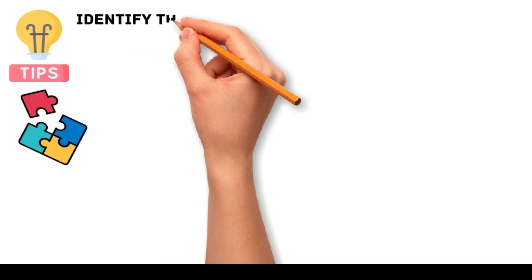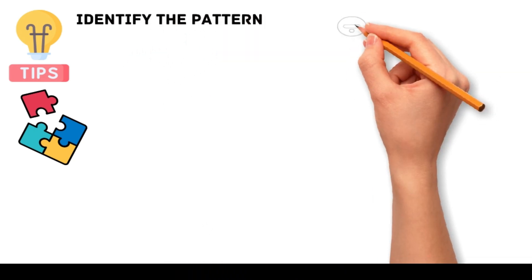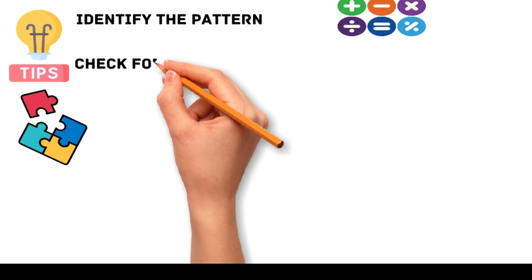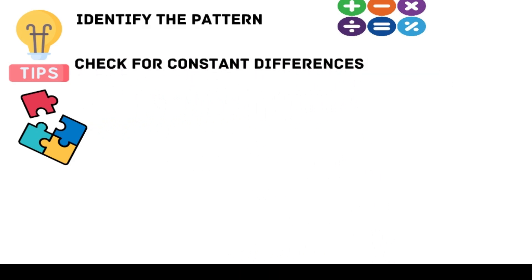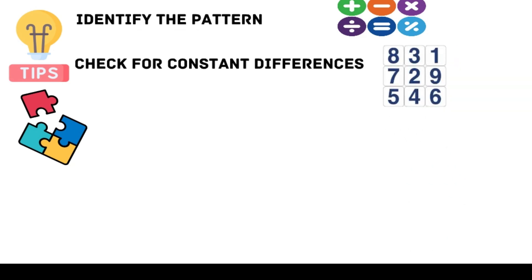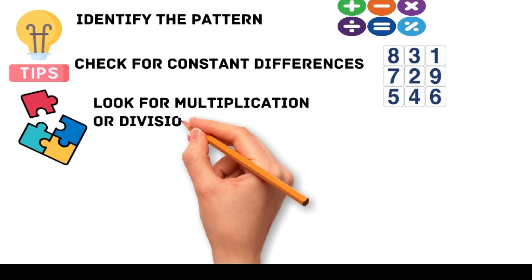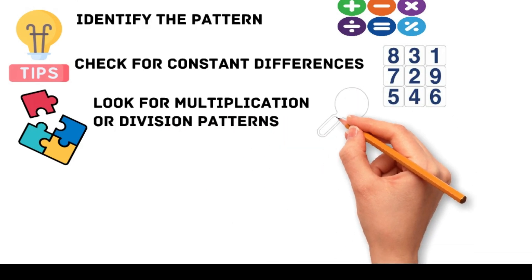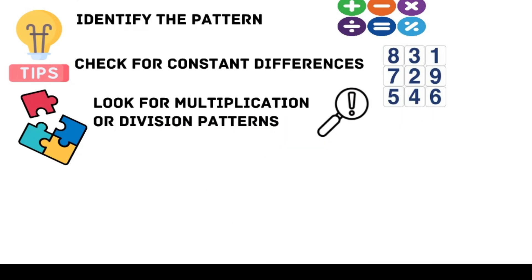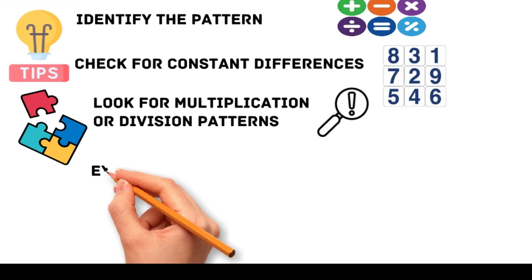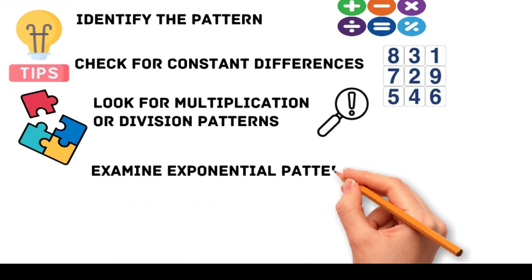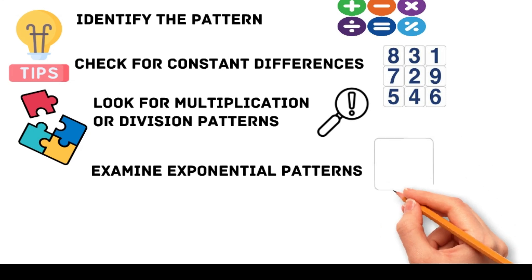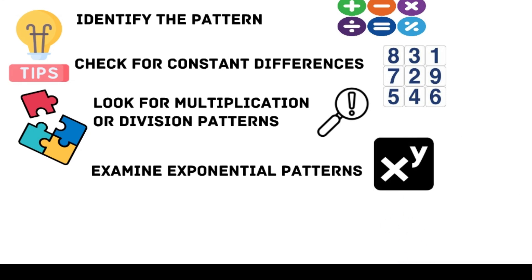Identify the pattern: look for common patterns such as addition, subtraction, multiplication, division, or a combination of these operations. Check for constant differences. Check if each number is obtained by multiplying or dividing the previous number by a constant. Examine exponential patterns: identify if the numbers follow an exponential pattern, such as powers or factorials.